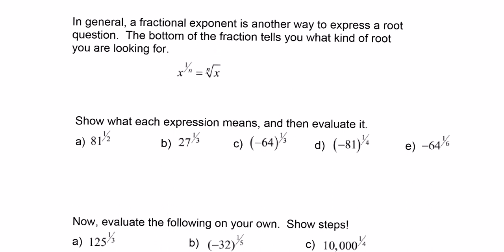Now you've done this before on your calculators. For an example like 8 to the 1 third, some of you would write 3 on your calculator, then hit shift and the x-to-the-blank button to get what you're looking for, or the y-to-the-x button, and then put the number 8. The sequence changes between different calculators, so take a moment and speak with your teacher about that.